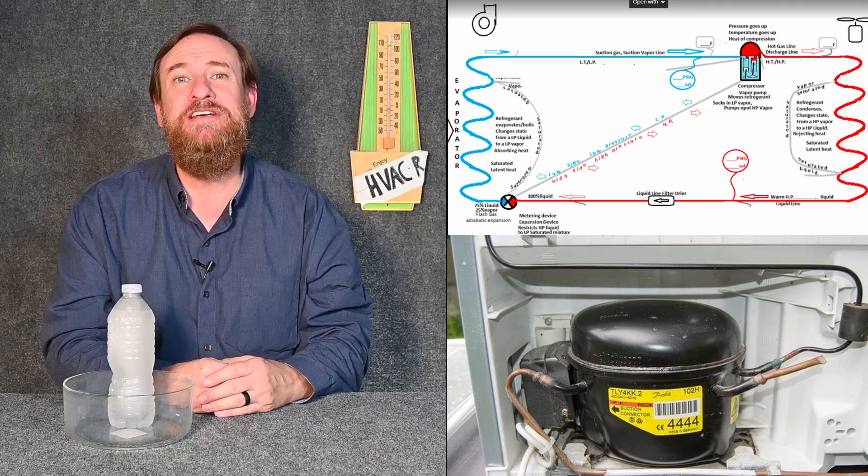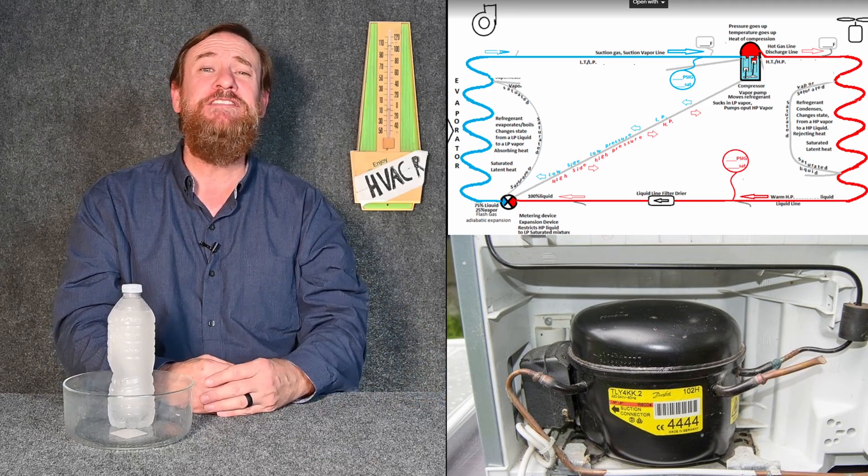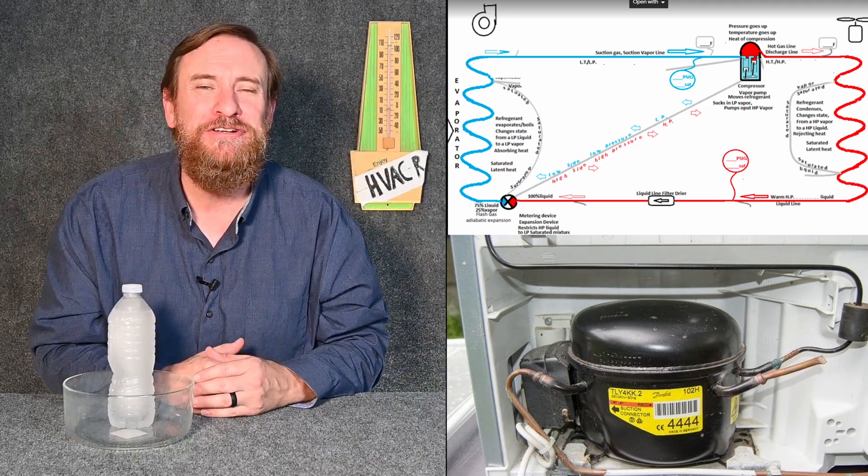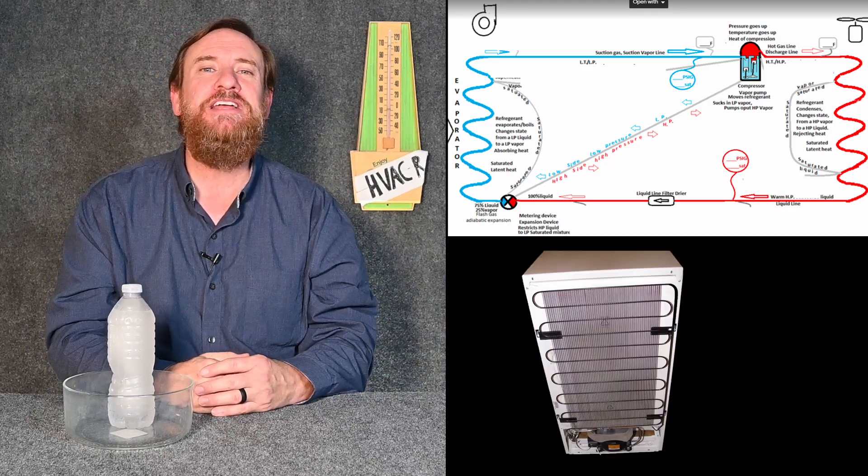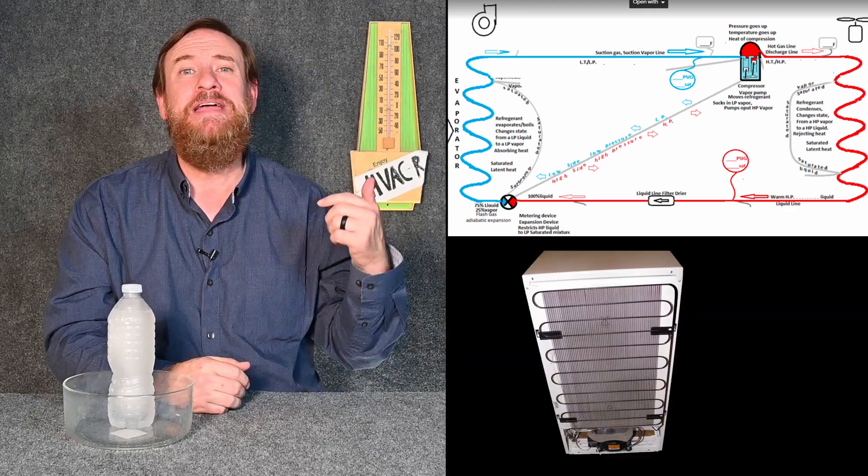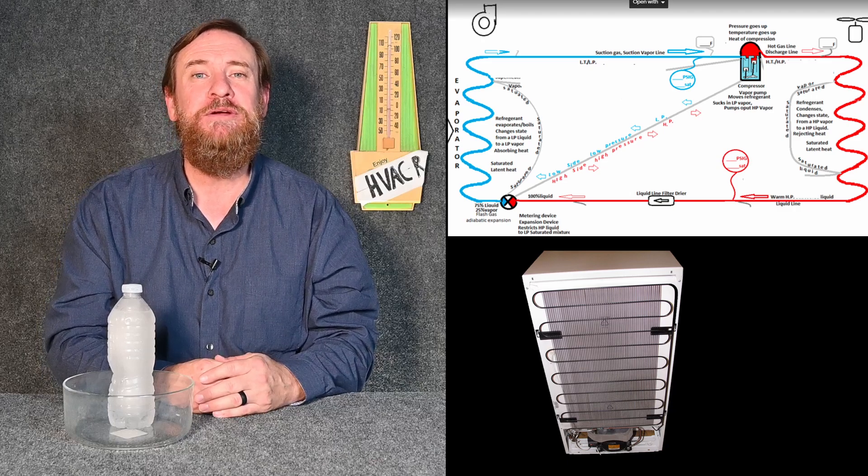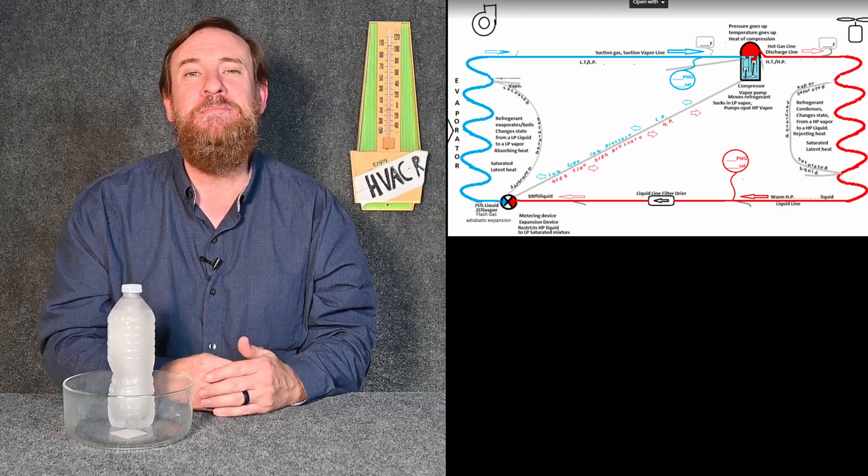We then go to the compressor. We raise it from a low-temperature, low-pressure superheated vapor to a high-temperature, high-pressure superheated vapor. And then we put it through the condensing cooler. We desuperheat, make that refrigerant change state from a vapor to a liquid. And then we sub-cool that liquid back to the metering device.